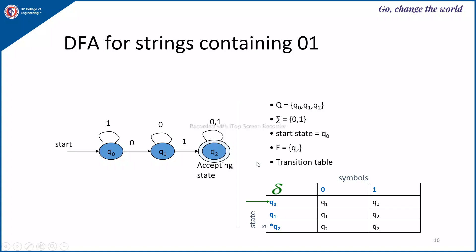We conclude by writing all 5 parameters: Q = {Q0, Q1, Q2}, sigma = {0, 1}, start state is Q0, and final state is Q2. The transition table has rows for states and columns for symbols: delta(Q0, 0)=Q1, delta(Q0, 1)=Q0, delta(Q1, 0)=Q1, delta(Q1, 1)=Q2, delta(Q2, 0)=Q2, delta(Q2, 1)=Q2. The start state is marked with an inward arrow and the final state with a star. The transition table gives all 5 parameters of the DFA.